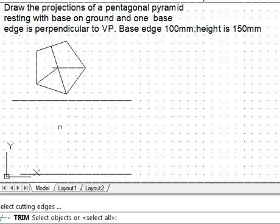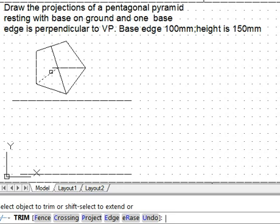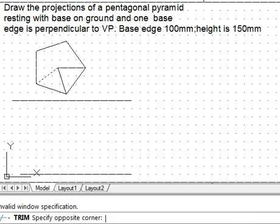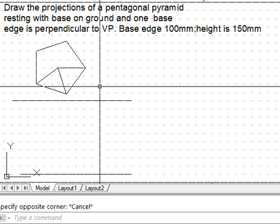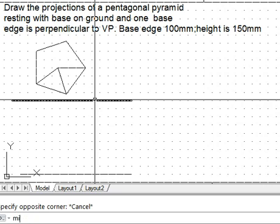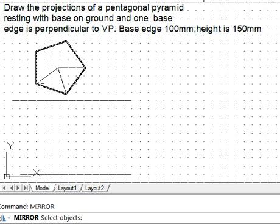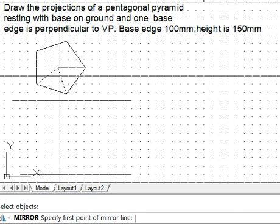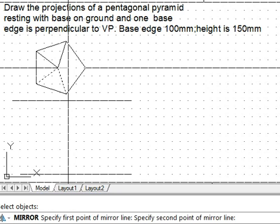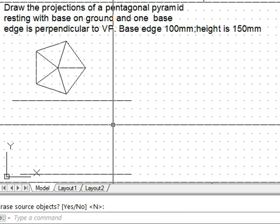We can use mirror, another command to exploit the symmetry. We know it is symmetric like this, so we can draw the rest of the slant edges. Now we have to draw the front view.